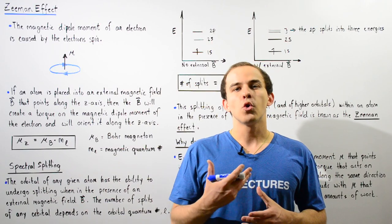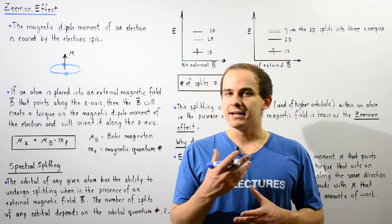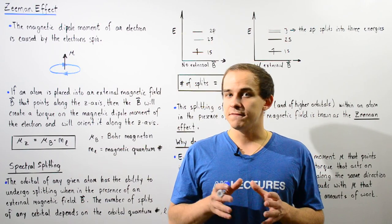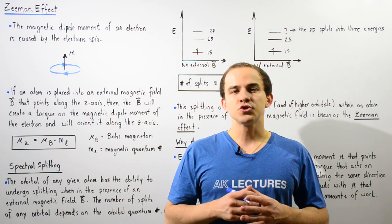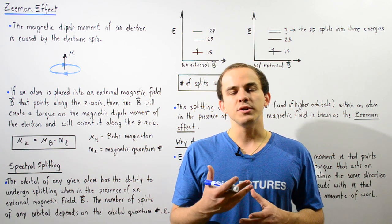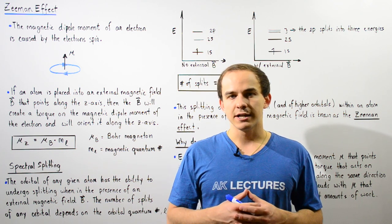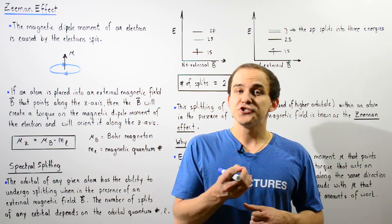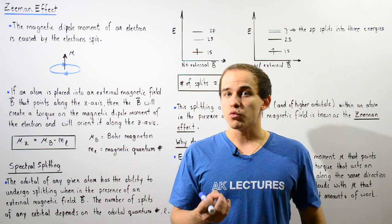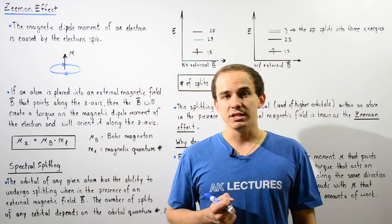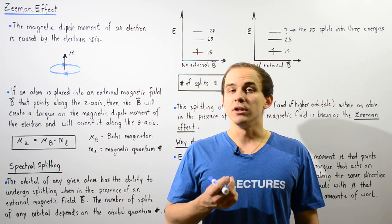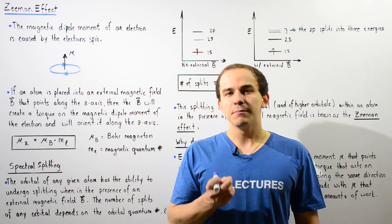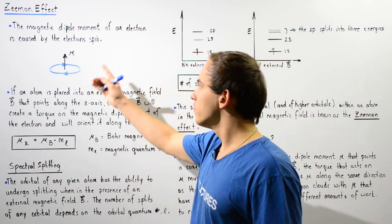In this lecture, we're going to discuss a concept known as the Zeeman effect. But first, let's recall what we discussed in the previous lecture. Recall that the spin of the electron around the nucleus of the atom creates the electron's magnetic dipole moment, given by mu.